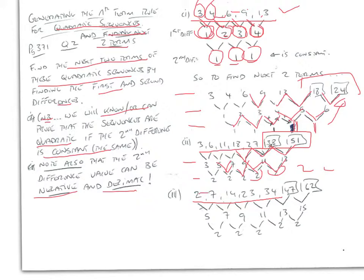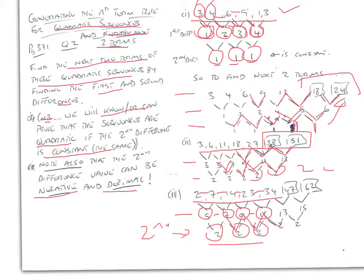With a constant second difference of 2, the next first differences are 13 and 15. So the next two terms are 34 + 13 = 47 and 47 + 15 = 62.